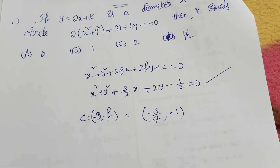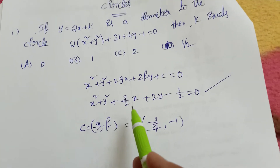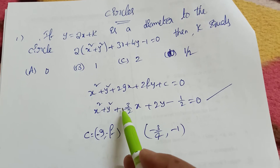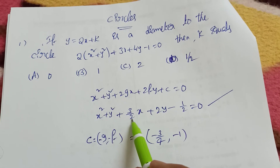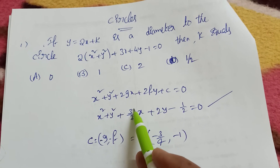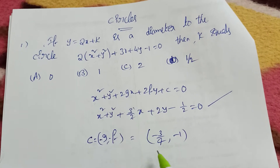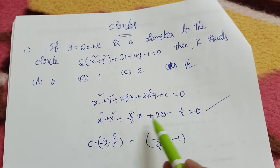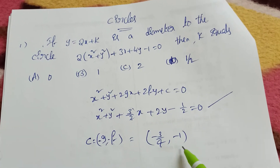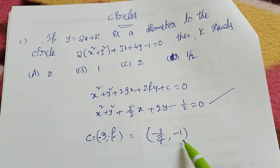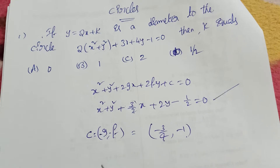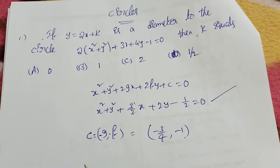Since we divided by 2, g = 3/4 and f = 1, so -f = -1. Therefore the center is (-3/4, -1).